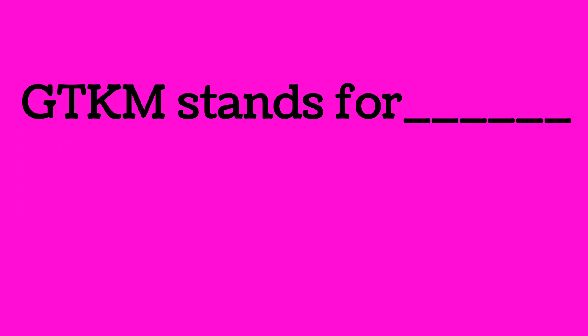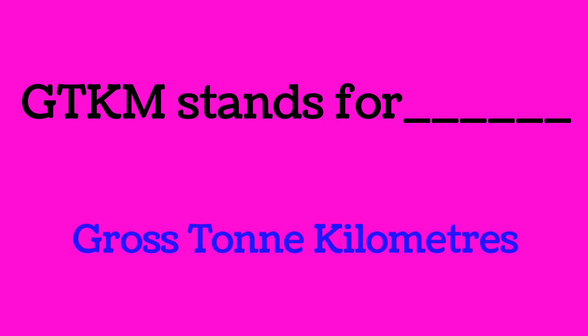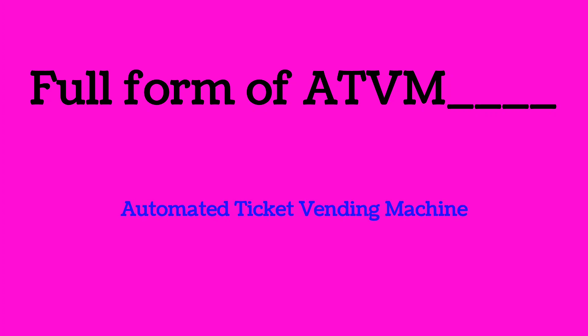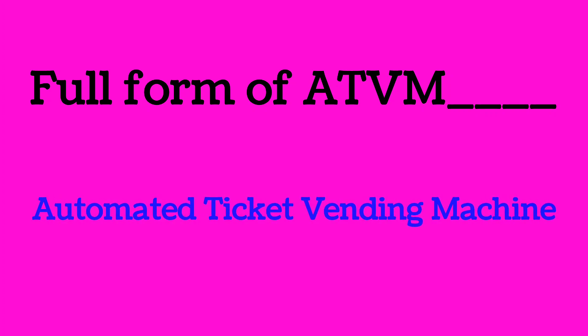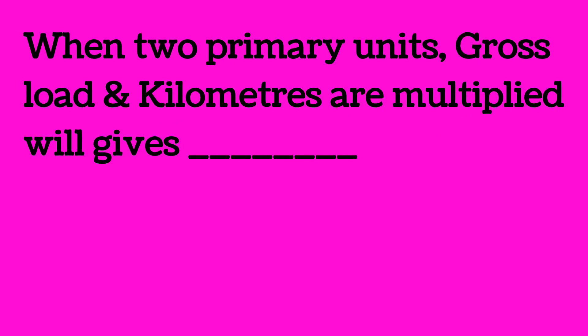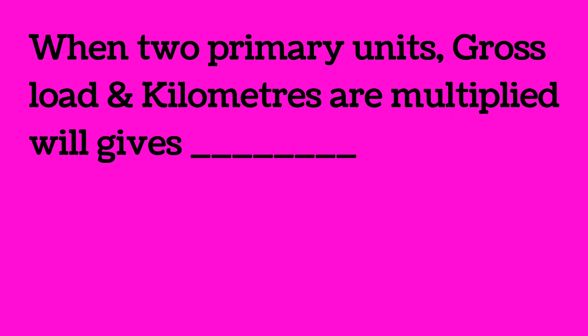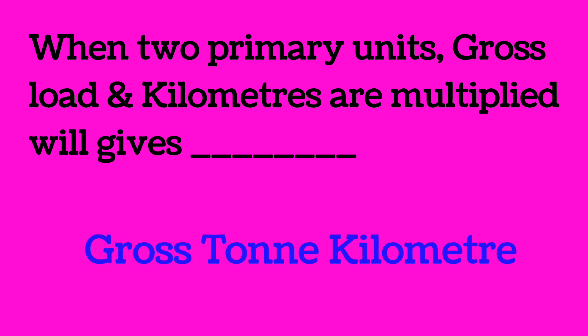What does GTKM stand for? GTKM means Gross Ton Kilometer. Full form of ATVM: ATVM stands for Automated Ticket Vending Machine. When two primary units — gross load and kilometers — are multiplied, the result is Gross Ton Kilometer.